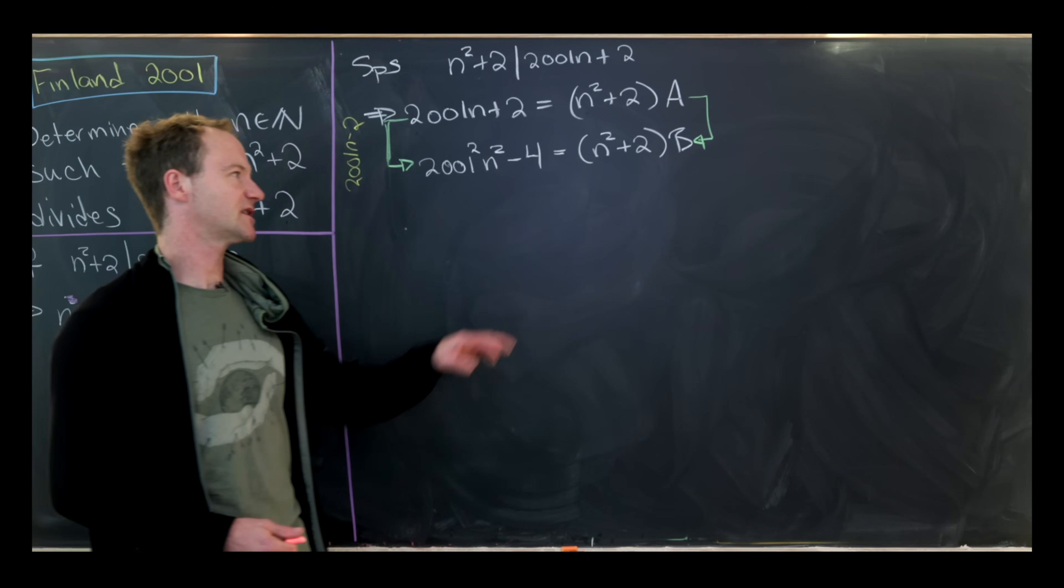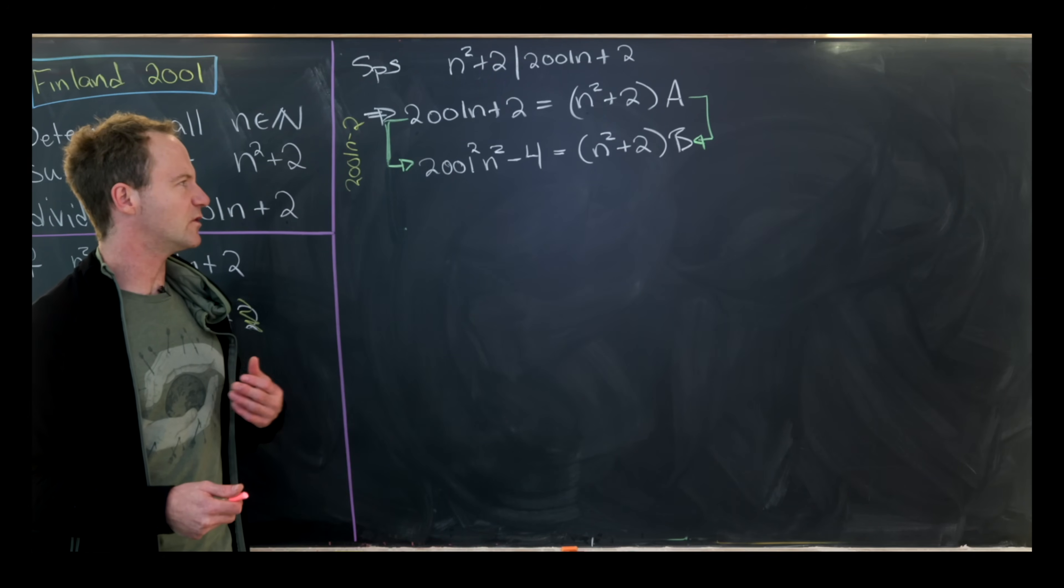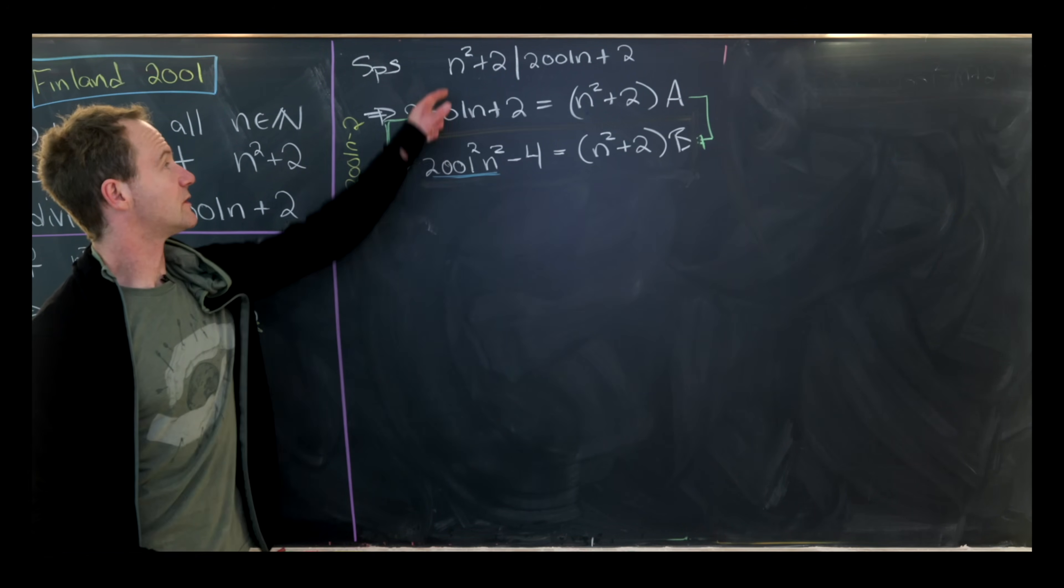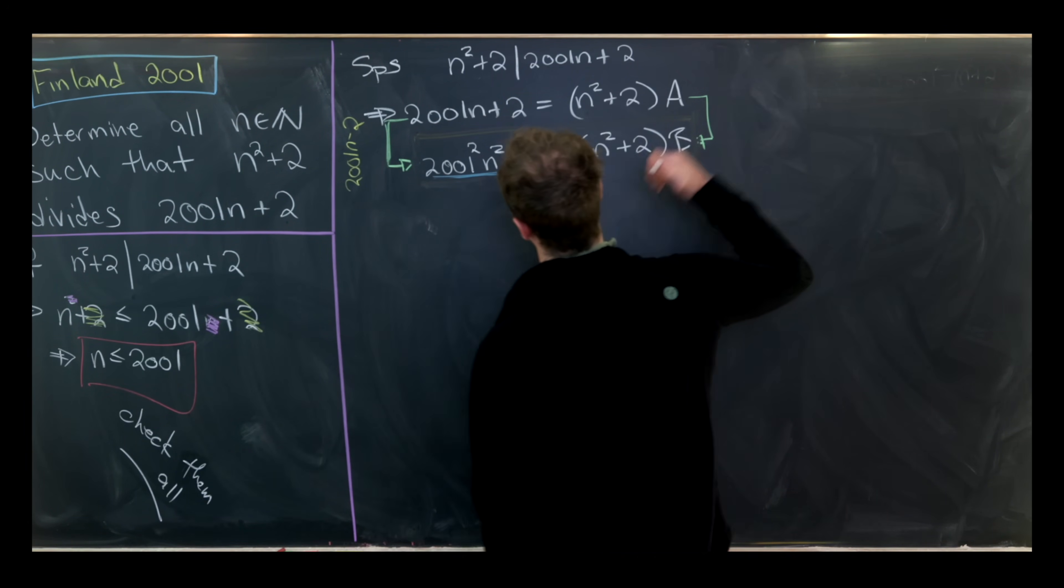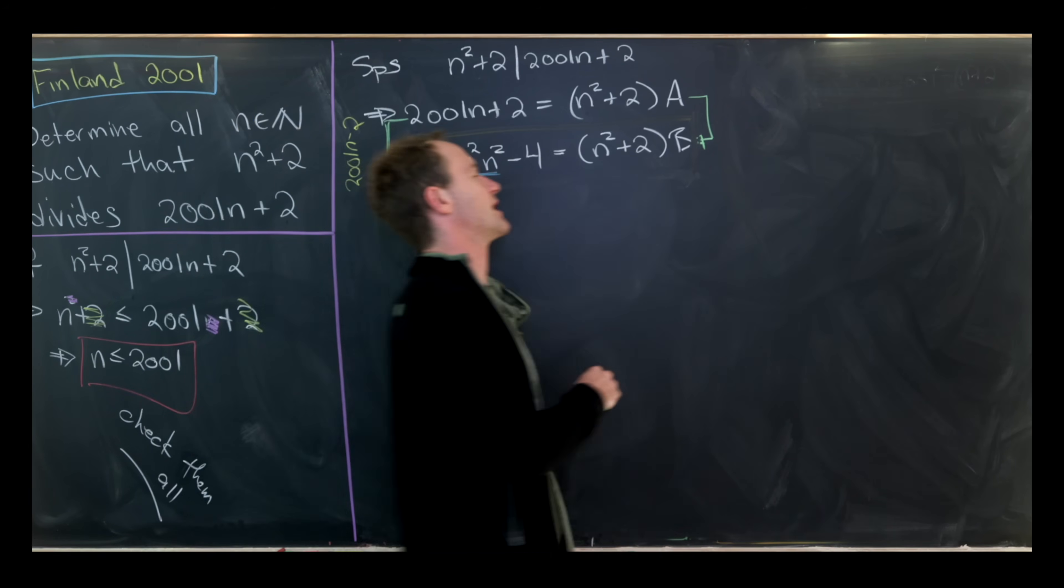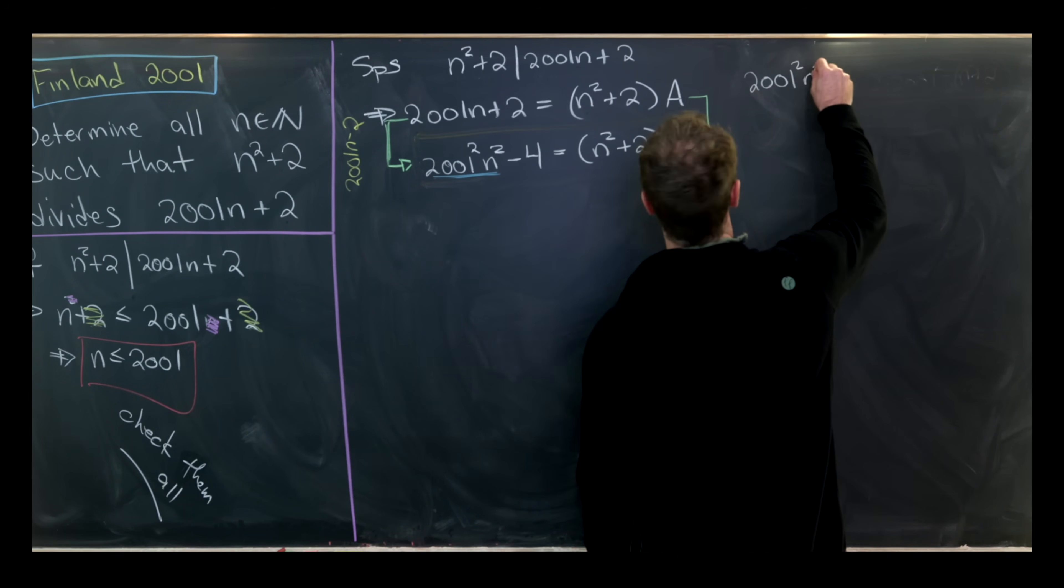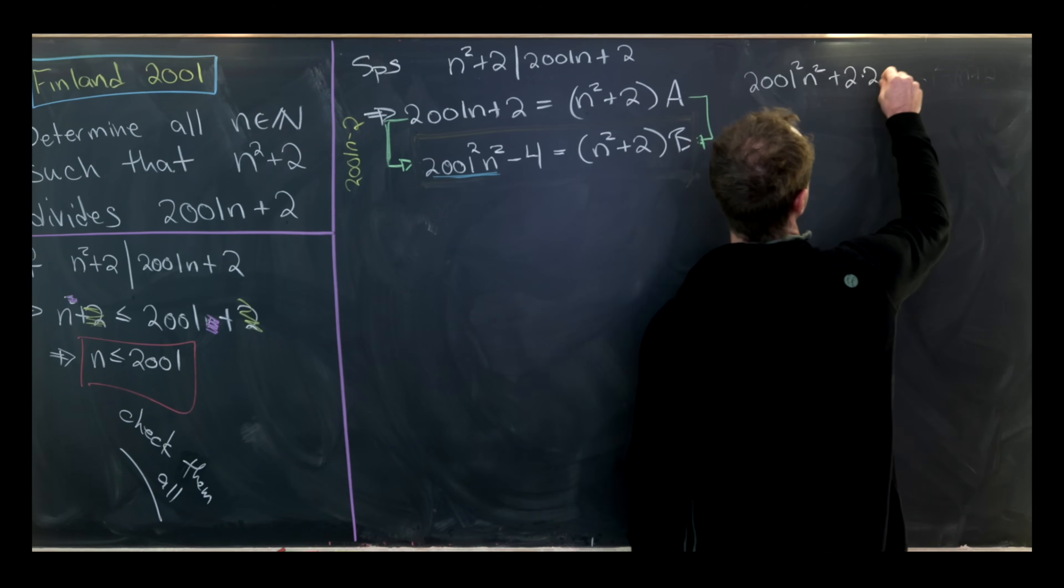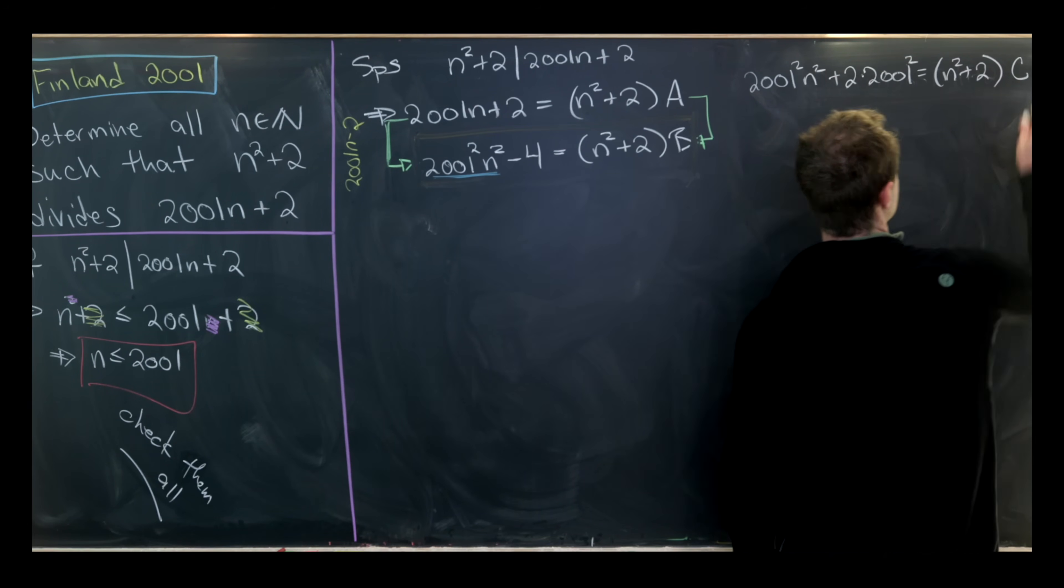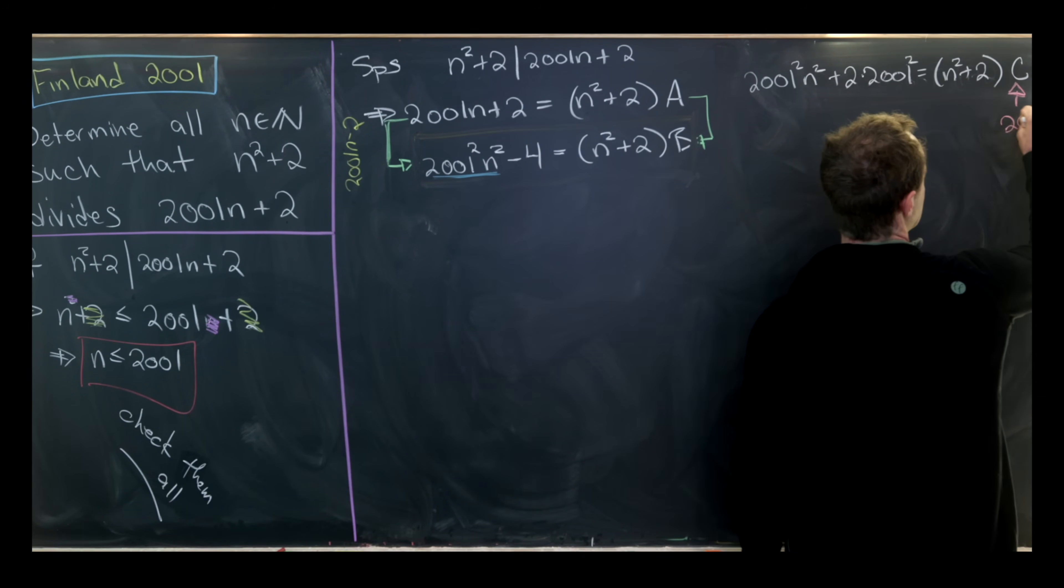We've got something with an n² on the left and the right-hand side. And now what we'd really like to do is somehow write n² + 2 in terms of something without an n² over on the other side of the equation. I'll take n² + 2 and multiply it by 2001² to make it have a term of the form 2001² times n². So we'll have 2001² times n² + 2 times 2001² equals n² + 2 times 2001².